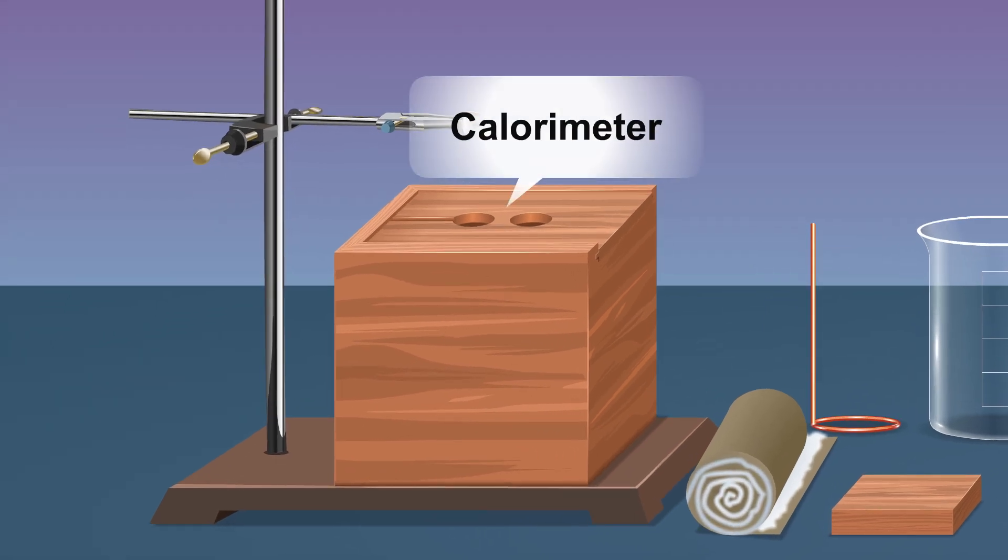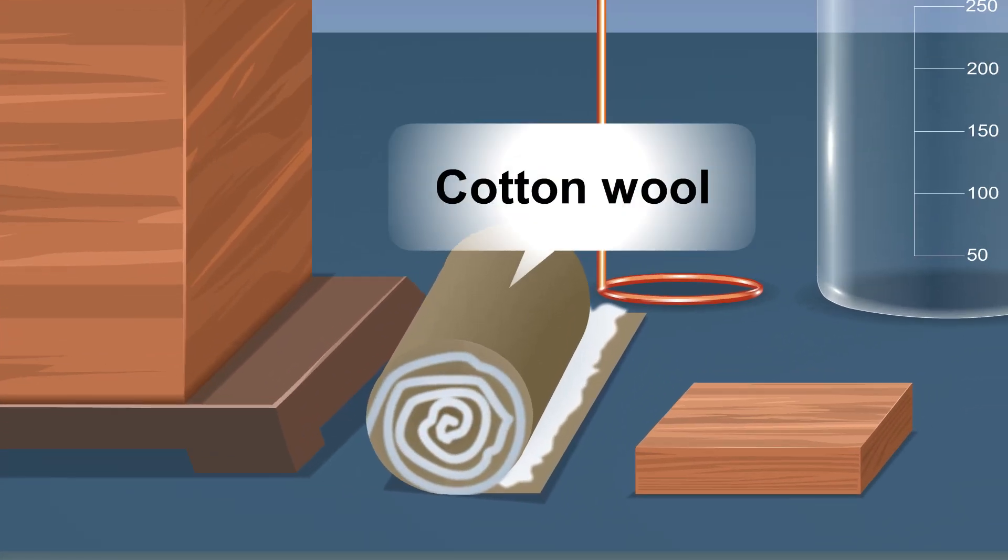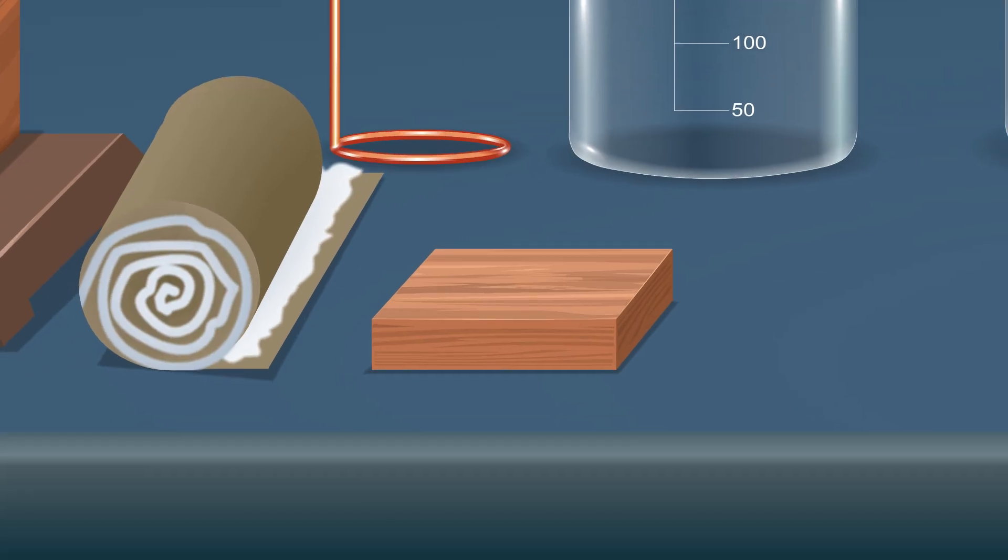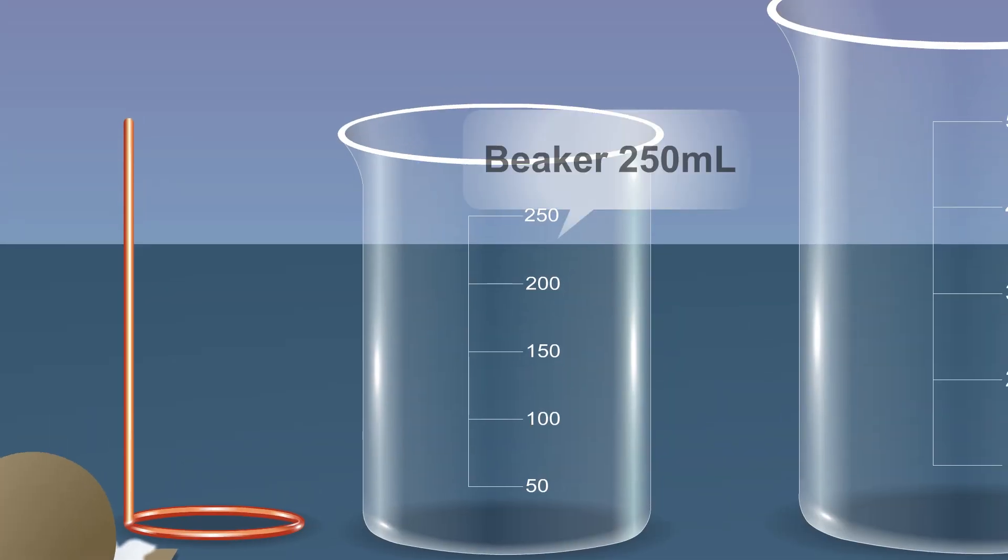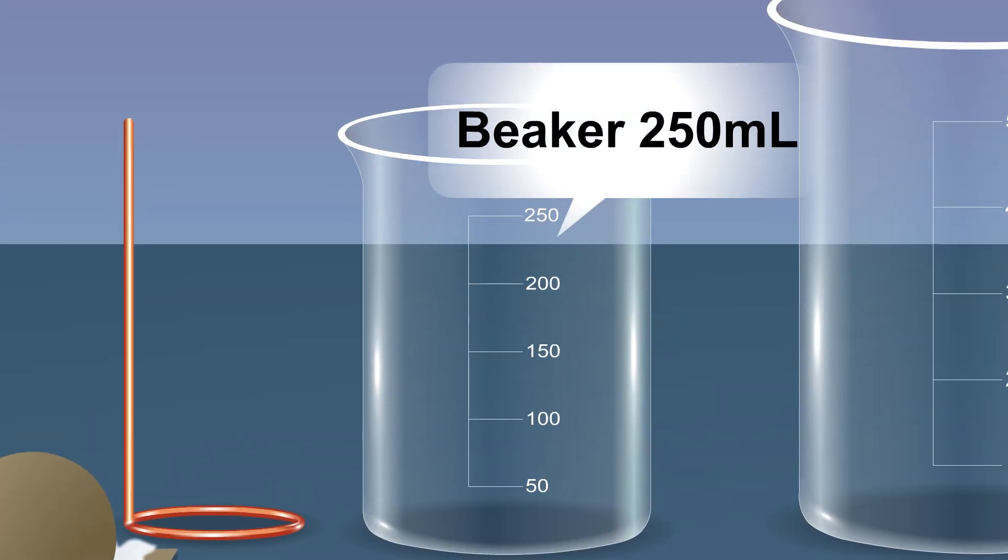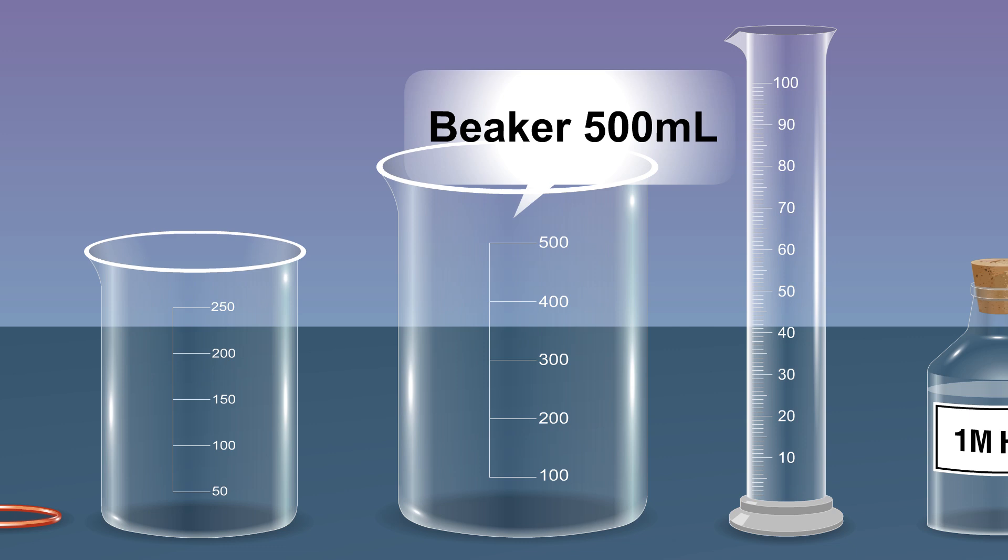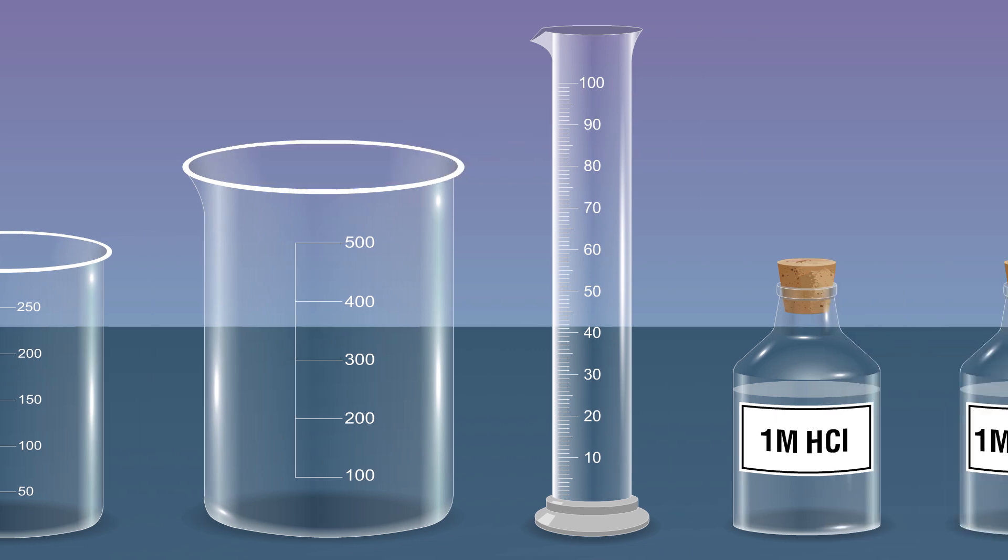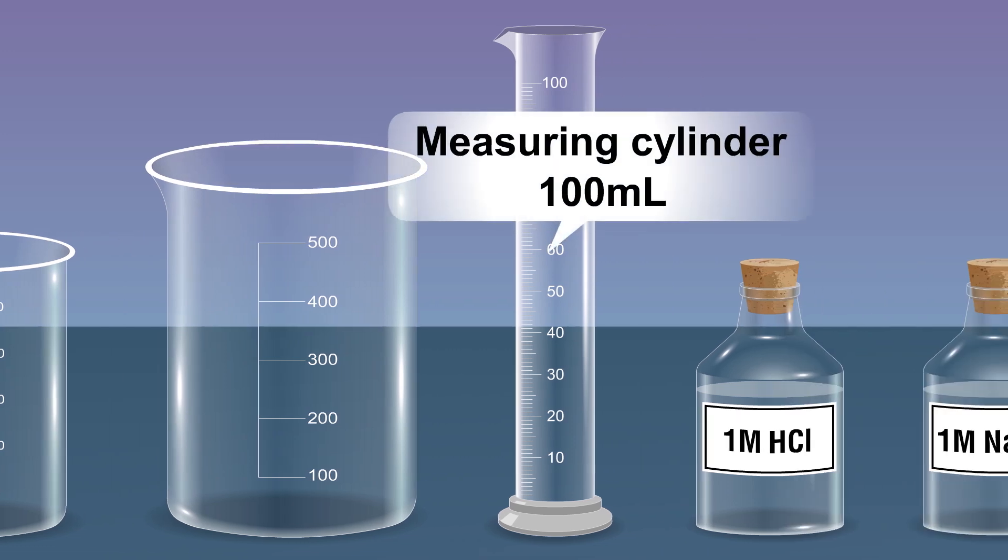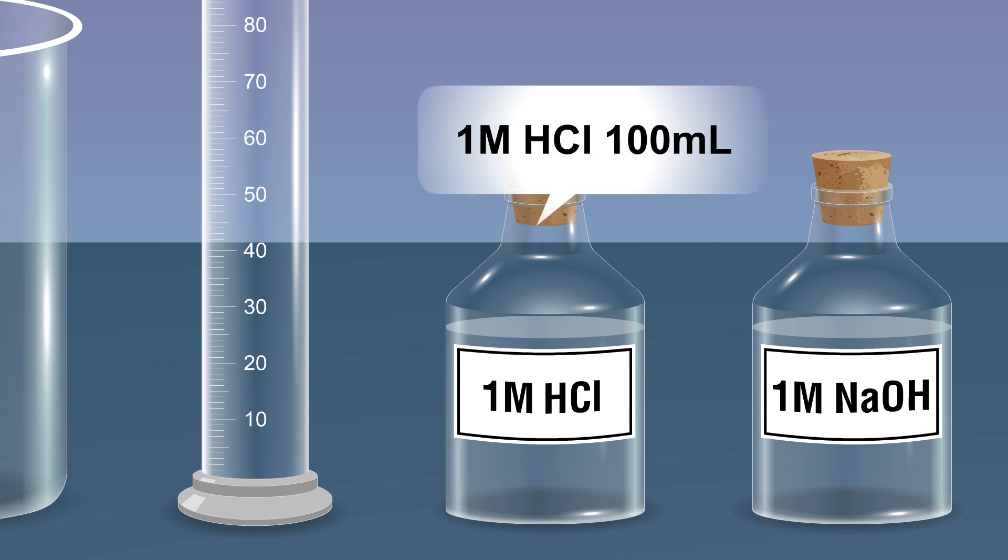250 milliliter beaker, 500 milliliter beaker, 100 milliliter measuring cylinder, 100 milliliters of 1M HCl, 100 milliliters of 1M NaOH, and a thermometer reading up to 110 degrees Celsius.